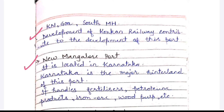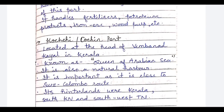Moving further south, the fourth port on the West Coast is New Mangalore port, located on the Karnataka-Kerala border. Karnataka is the major hinterland of this port. It handles fertilizers, petroleum products, iron ore, wood pulp, etc. When you read Chapter 6 or 7 on minerals and energy resources in the same book, you will learn which minerals are imported or exported from which port.